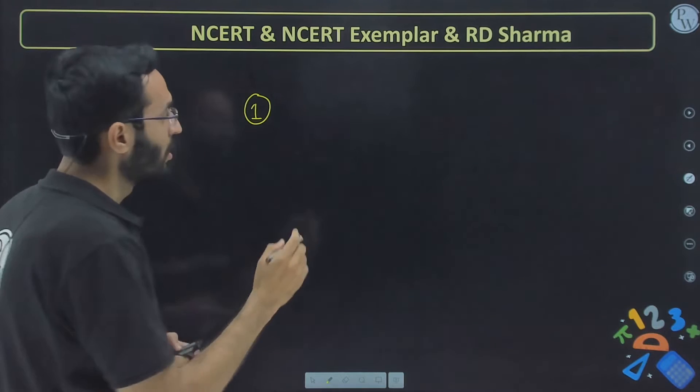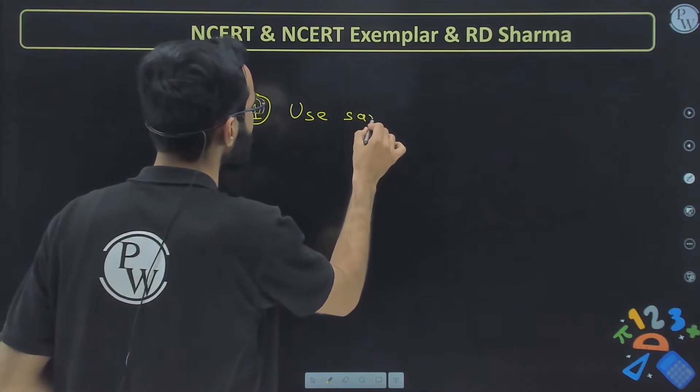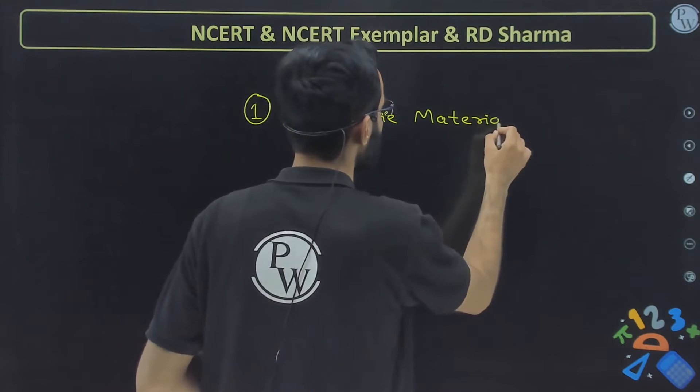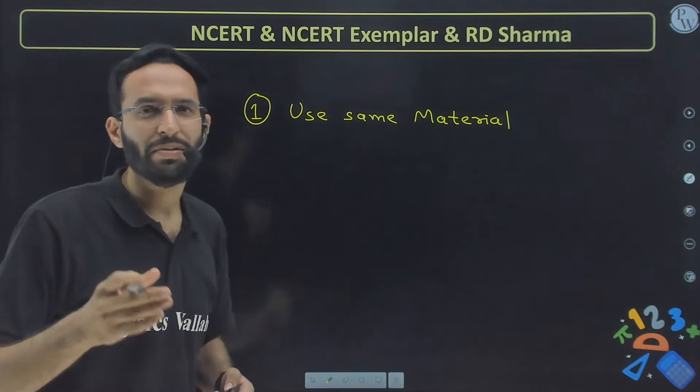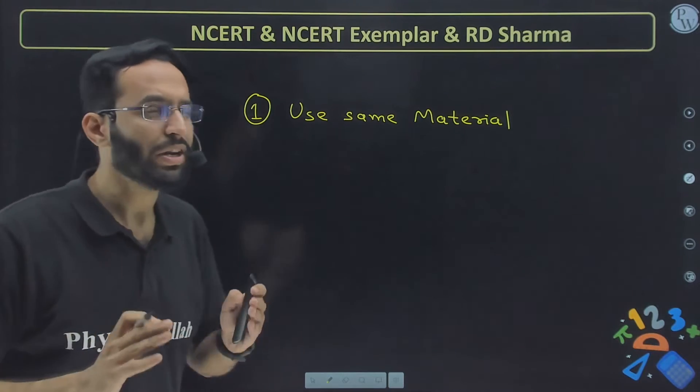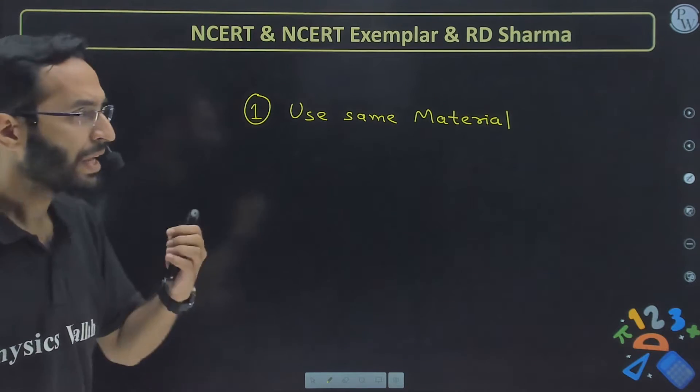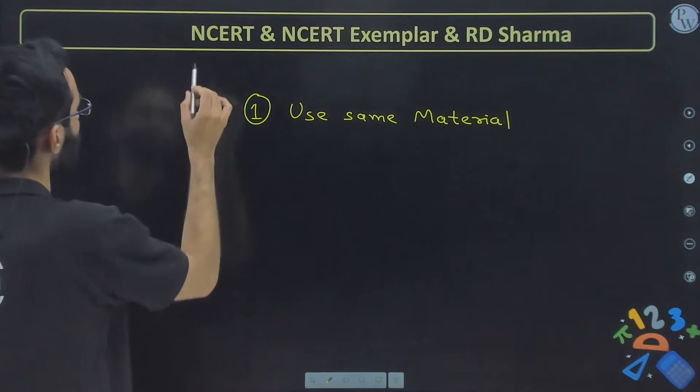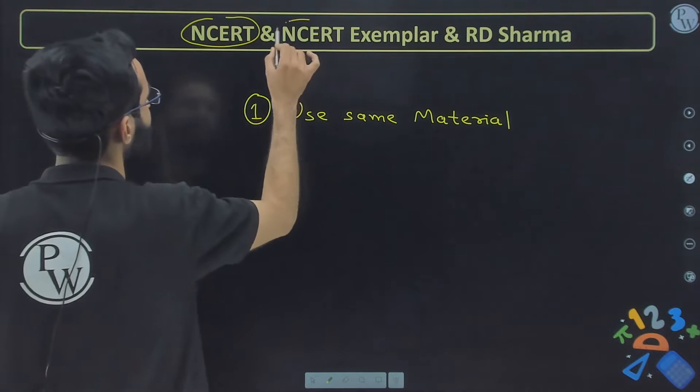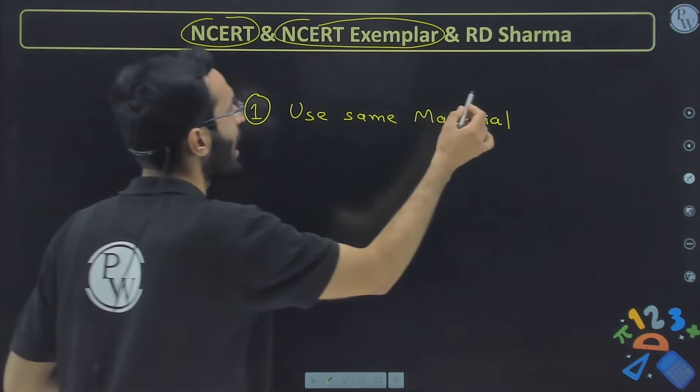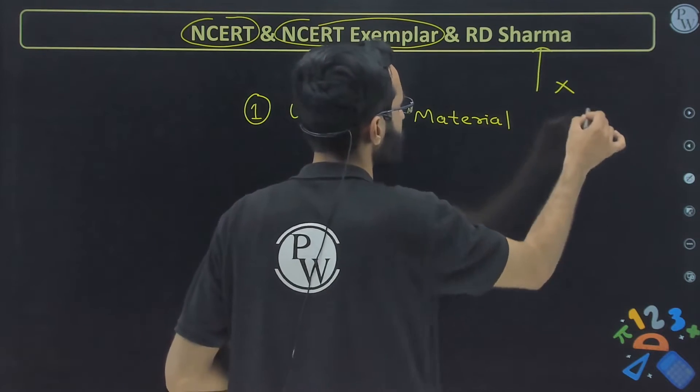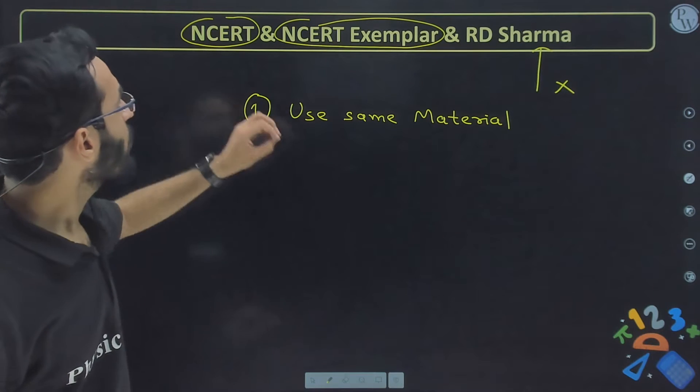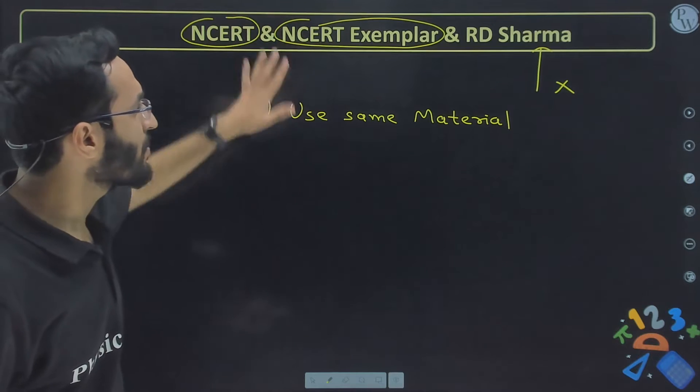Use same material which you have followed during your entire year or for last six months, seven months, eight months. Whichever material you have used, please follow that only. Few students I have observed that entire year they have done NCERT and NCERT exemplar, and in the end they are going for RD Sharma. No, this is a very huge mistake, this is a very huge blunder, frankly speaking.